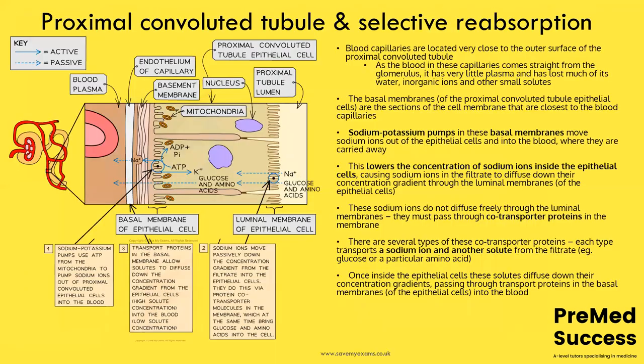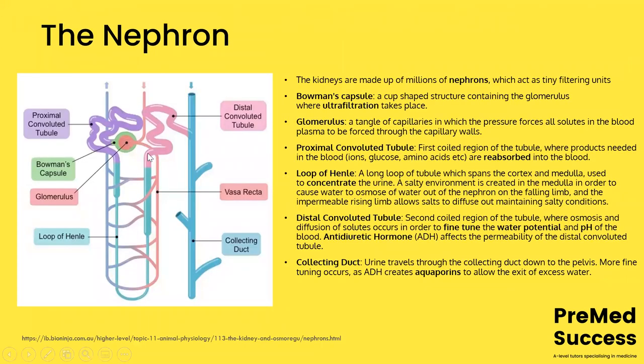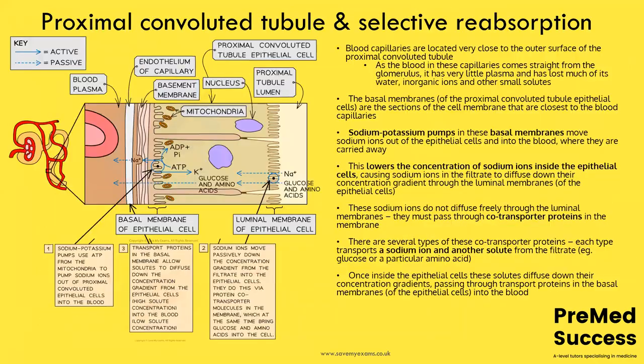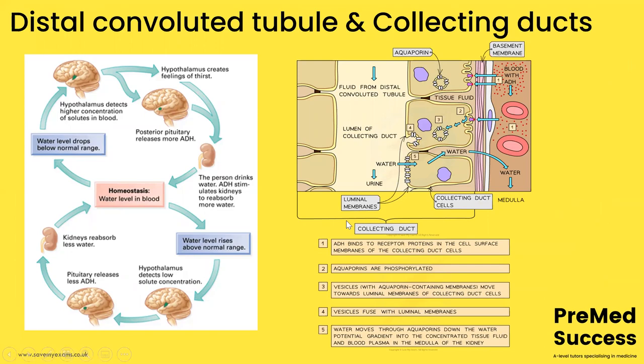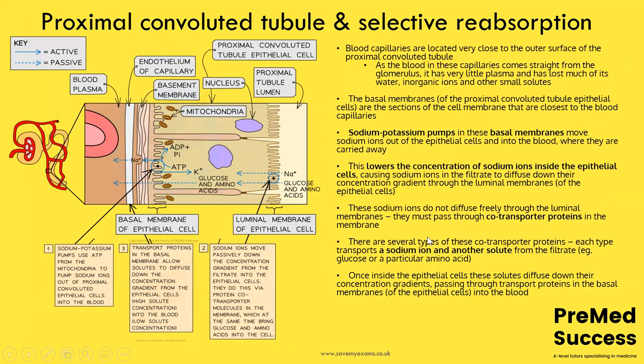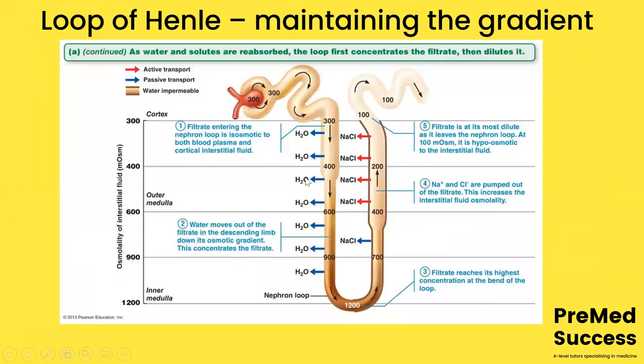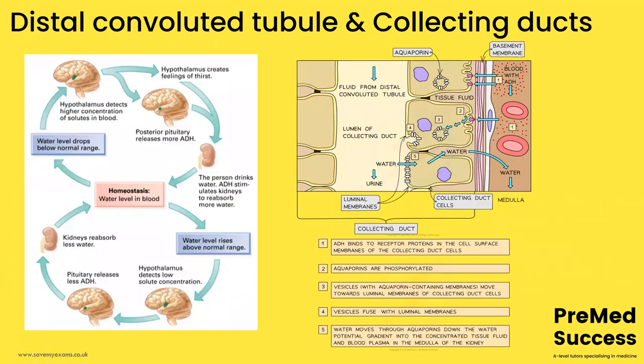The distal convoluted tubule and collecting duct fine-tune water balance. We've spoken about how solutes like glucose and amino acids get reabsorbed and how water is reabsorbed in the loop of Henle. But the DCT and collecting duct modulate water further — because you never produce exactly the same concentration or volume of urine every time. It depends on thirst and drinking. This fine-tuning involves higher-level brain control and what happens at the level of the kidney itself.